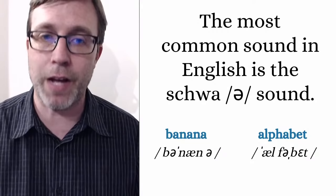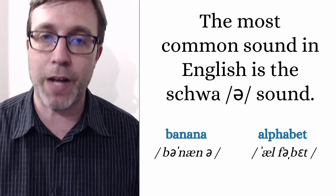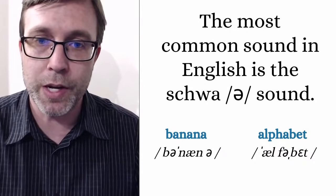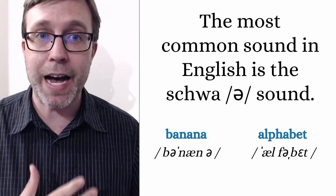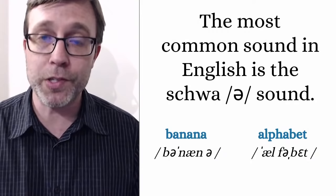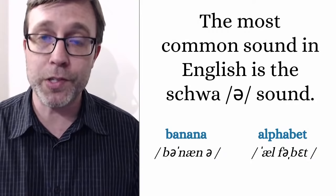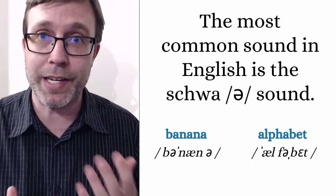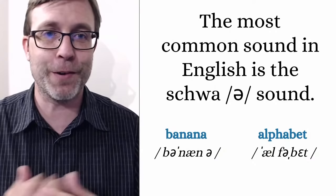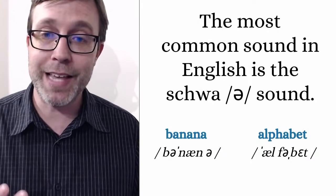I've given you two examples — just random words I chose. Banana. If you're looking at the IPA symbols, you can see it's like an upside-down E — that is the schwa. In the word 'banana,' there are three syllables and the schwa is in the first and the second syllable. Banana. Or even the word 'alphabet' — that second syllable has that schwa sound. You see that upside-down E.